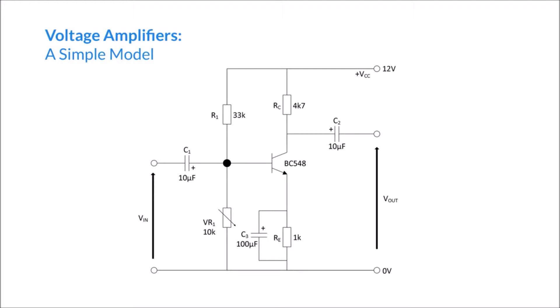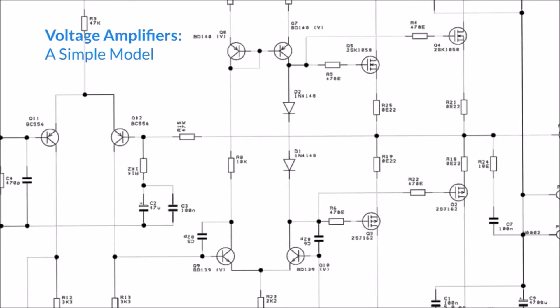Amplifiers have other parameters as well. They have an input impedance or resistance, and they also have an output impedance. Before we know it, amplifier circuits become very complicated, and so what we need is a simple model to try and represent them.